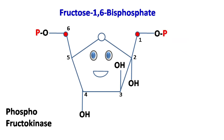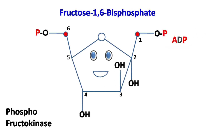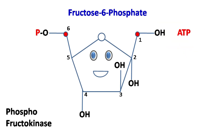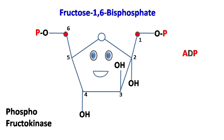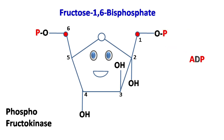Phosphofructokinase then phosphorylates fructose-6-phosphate to fructose-1,6-bisphosphate with the help of ATP.